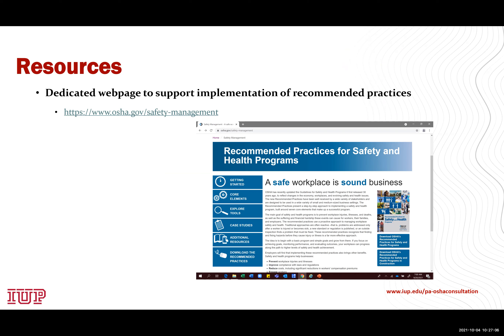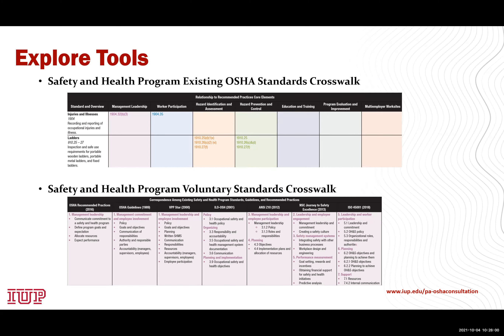OSHA has a dedicated webpage to support implementation of these recommended practices — it is a very powerful tool. On the left-hand side of the page, clicking on any of the buttons will provide more valuable information to assist with developing the program. Under the 'Explore Tools' button, one helpful item is the Safety and Health Program existing OSHA standard crosswalk, which shows the relationship between OSHA standards and the safety and health core program elements. For example, for ladders, you would look at OSHA's 1910.25, 26, and 27 series on ladders, then see what hazard prevention and controls those standards describe.